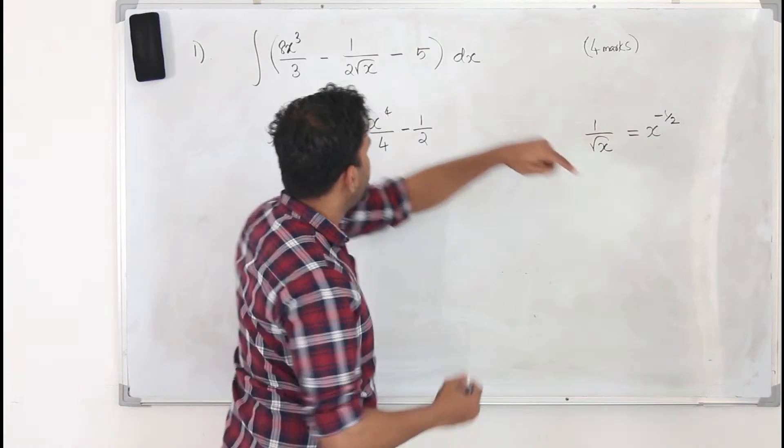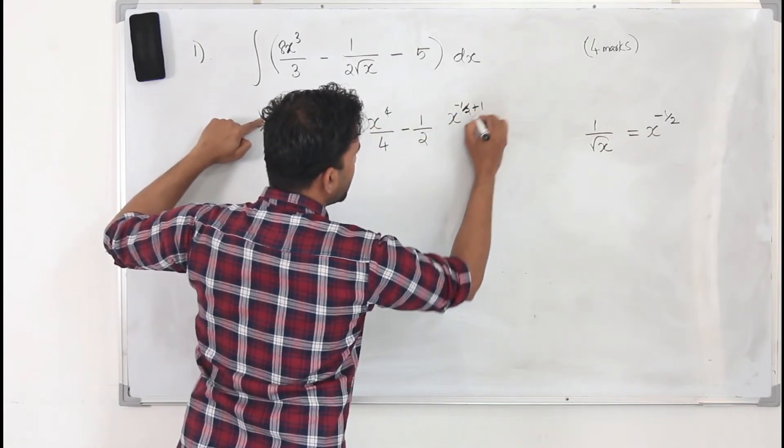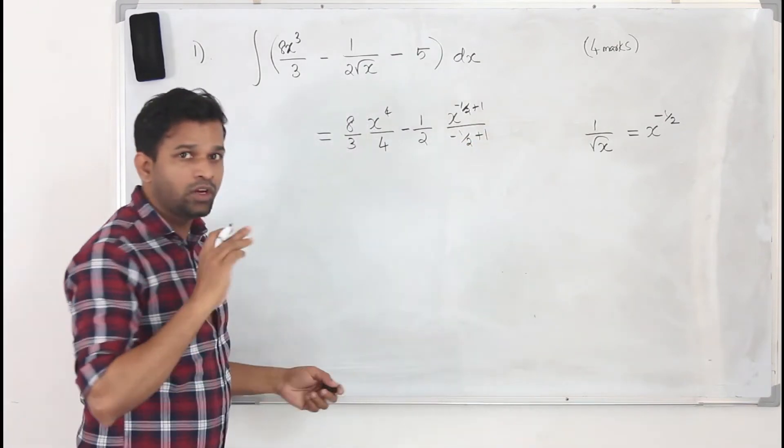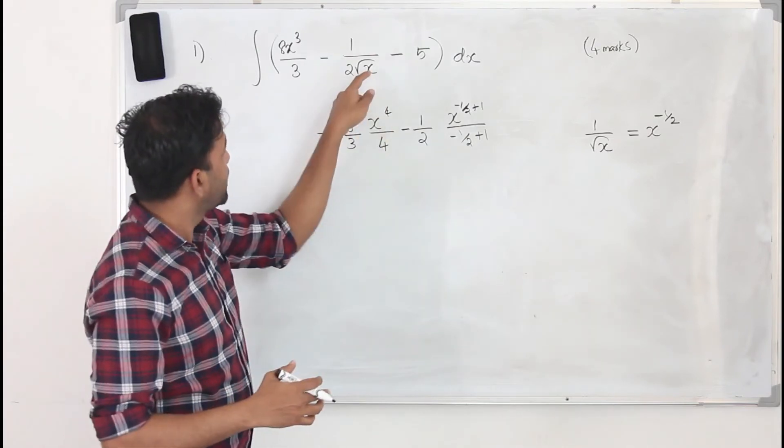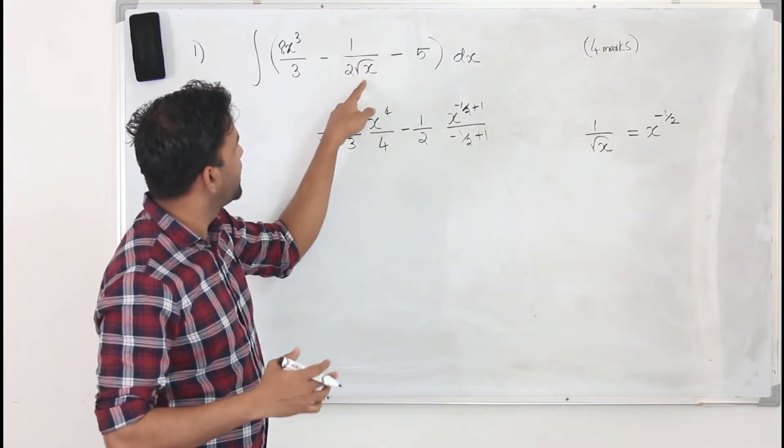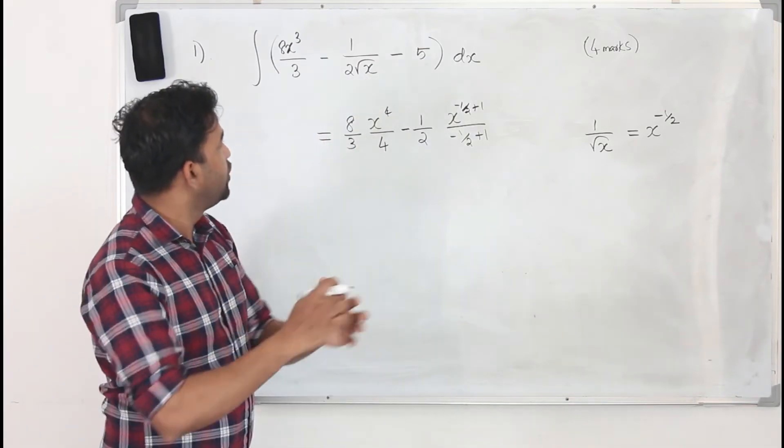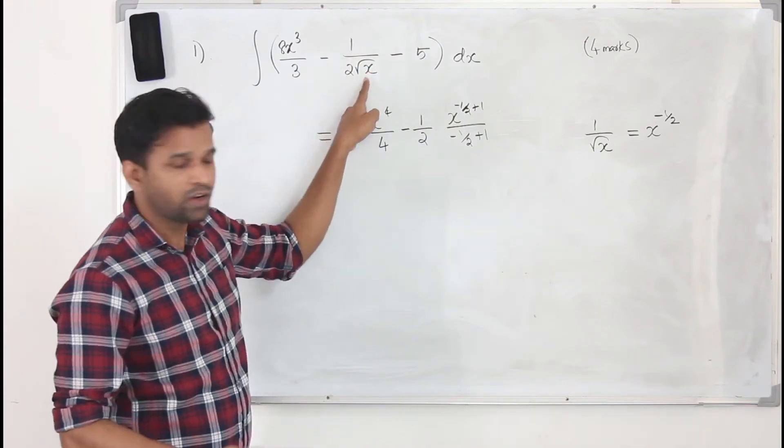Now you have to integrate this. So it becomes x to the power minus 1/2 upon minus 1/2. You need to know this: whenever the function is in the denominator, you cannot just differentiate or integrate the function by keeping it in the denominator. You need to bring it to the numerator.